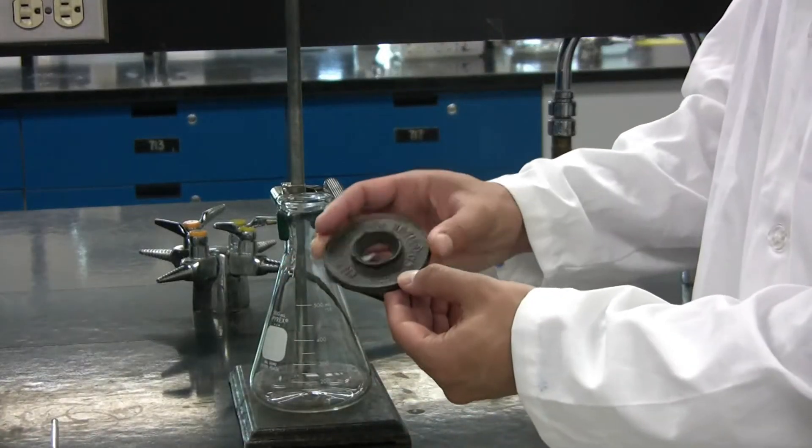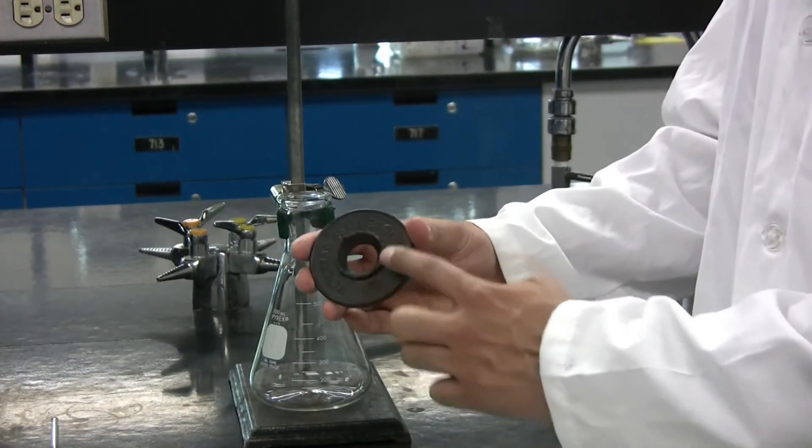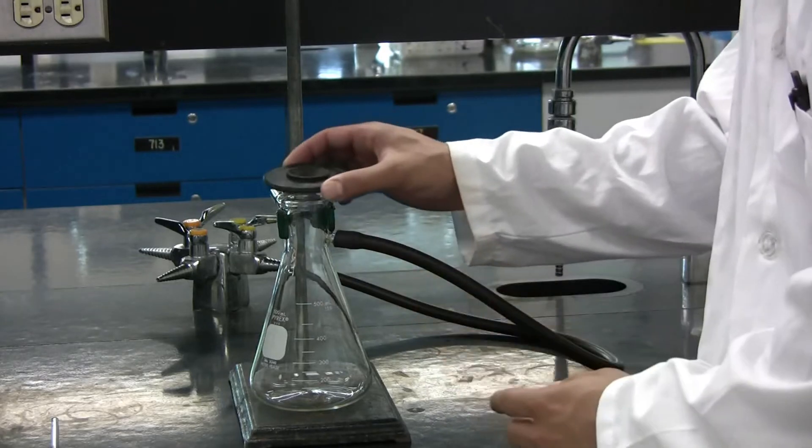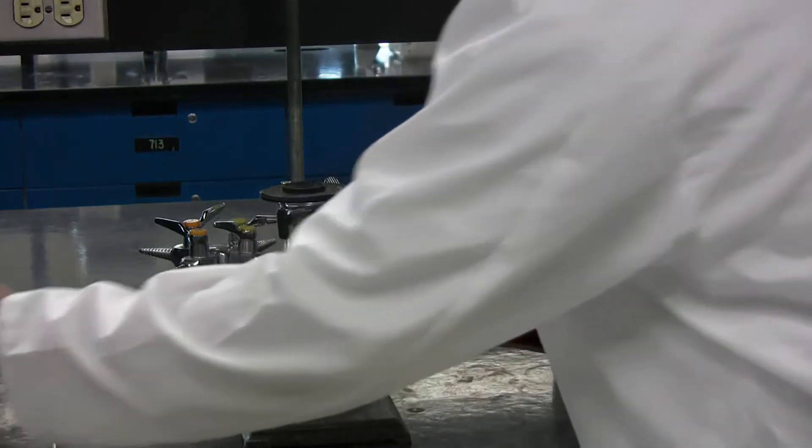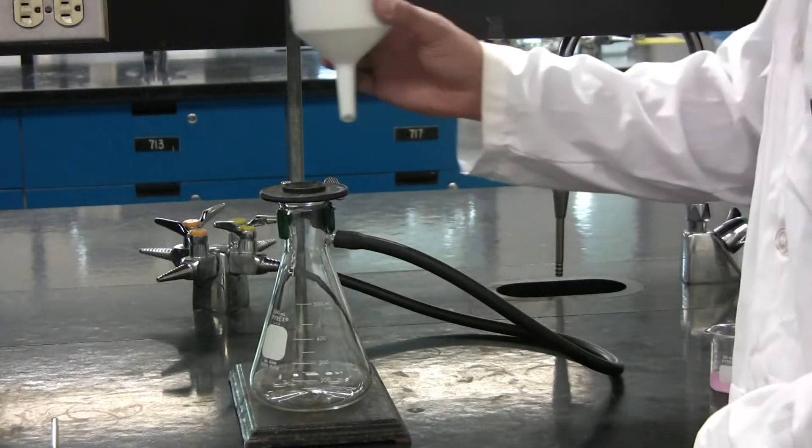Take the rubber seal, writing side up, and place it on the Erlenmeyer flask. Now, place the Buchner funnel on top of this.